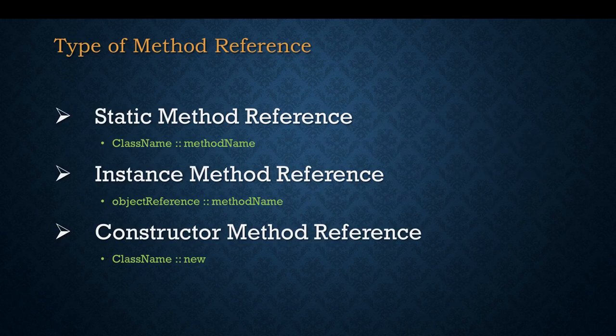There are three types of method reference. The first one is static method reference — the class name has to be a functional interface and the method name will be a static method. In case of instance method reference, we use the reference variable name of an object which has to be instantiated first, and then one method available within that object. The third type is constructor method reference, where we use class name, then double colon new, which means it returns an object of that specific class.